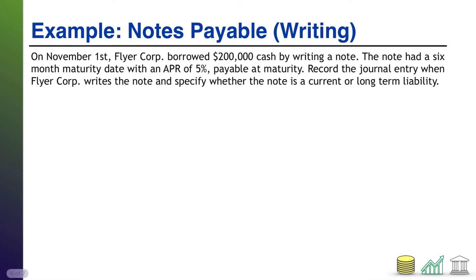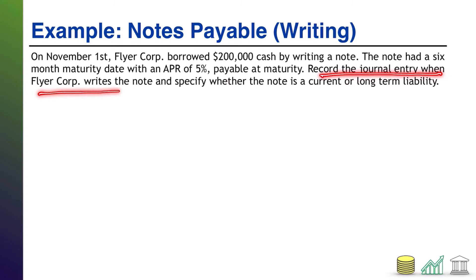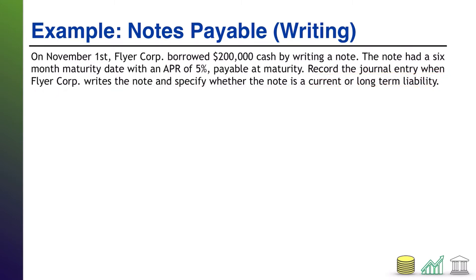Let's see an example. We're going to do this over three separate slides — first we're going to write the note, then deal with interest, then deal with principal payback. On November 1st, FlyerCore borrowed $200,000 cash by writing a note. The note had a six-month maturity date and an APR of 5%, payable at maturity. Record the journal entry when FlyerCore writes the note and specify whether this would be a current or long-term liability on the balance sheet.